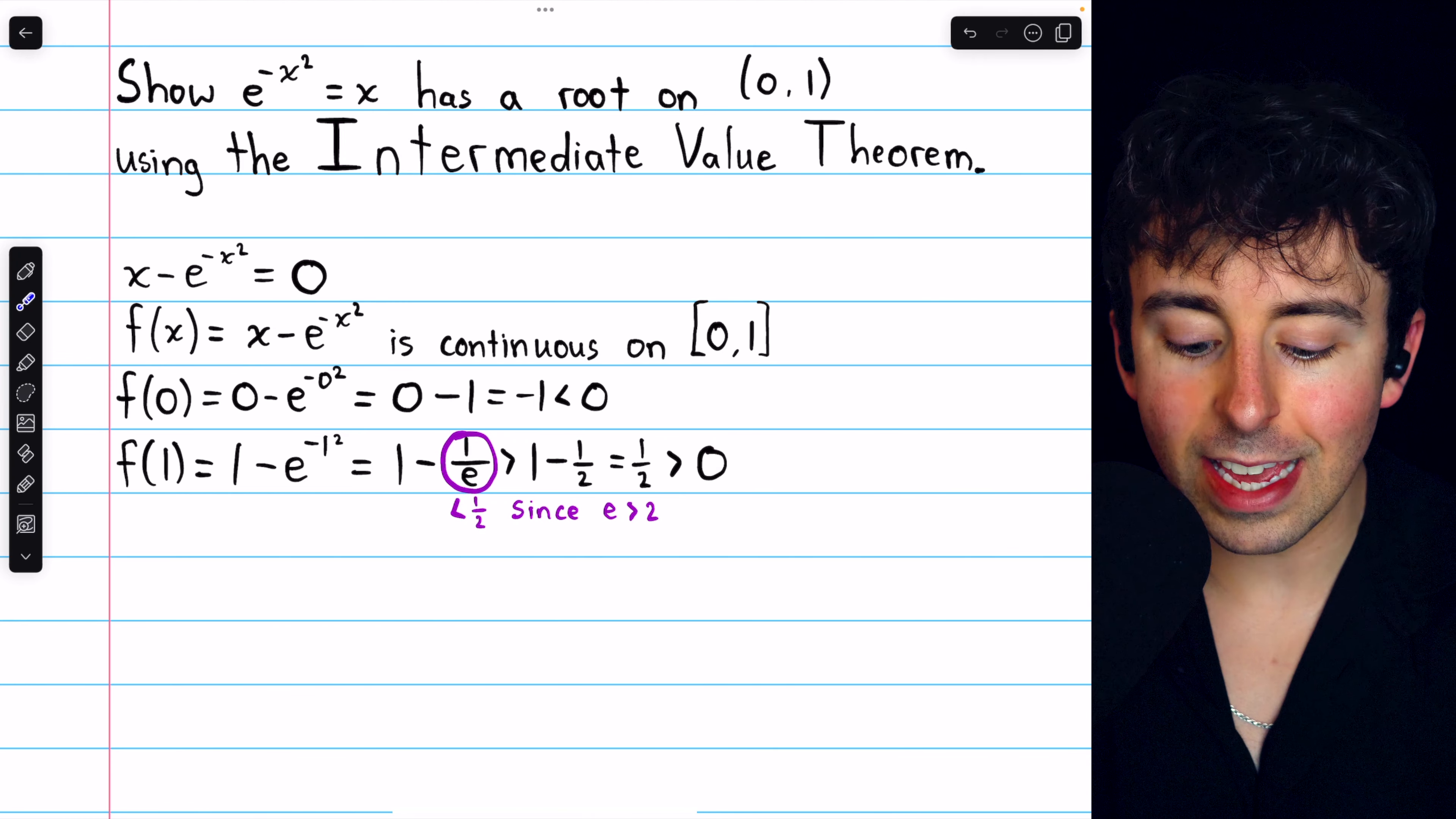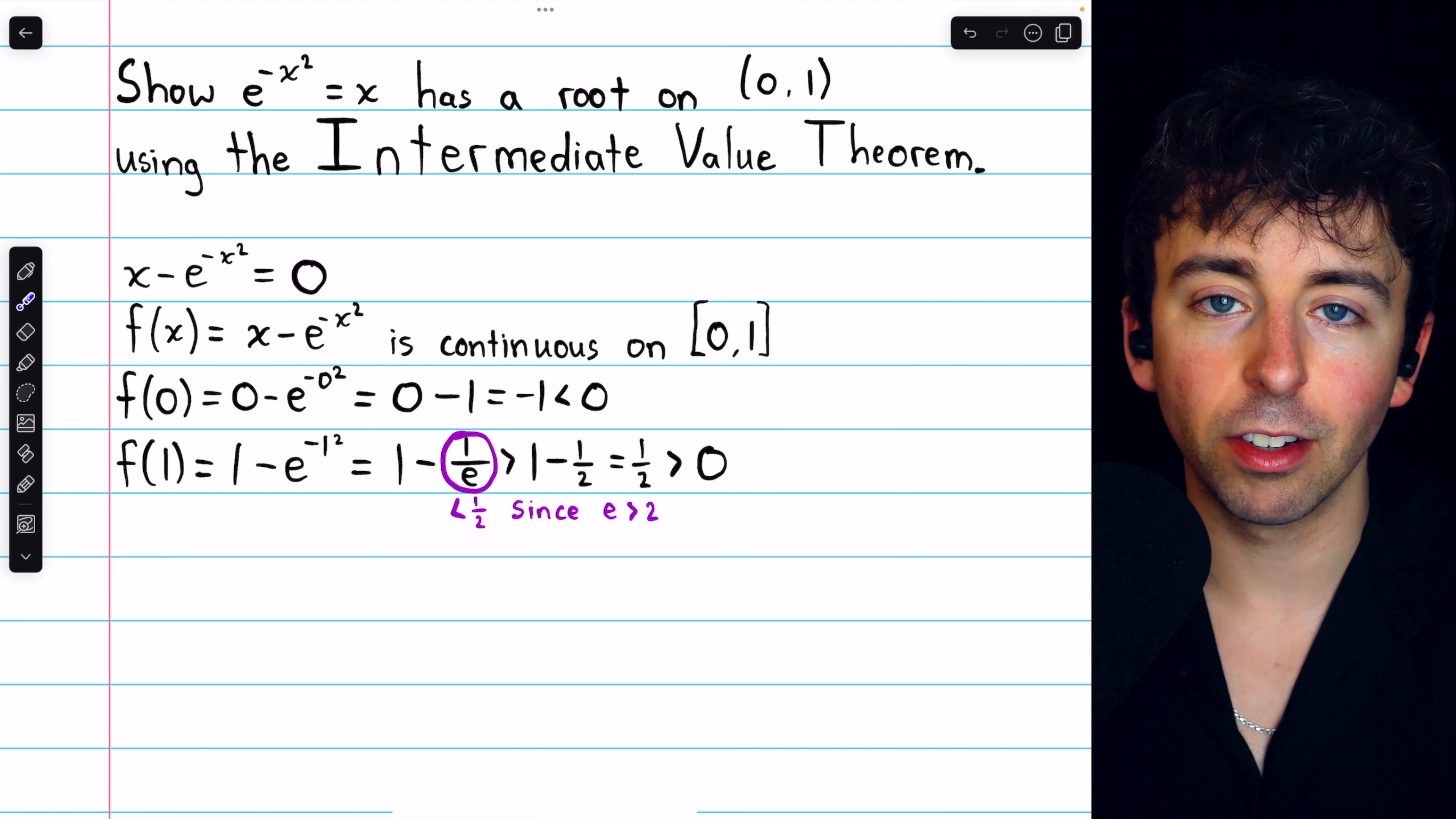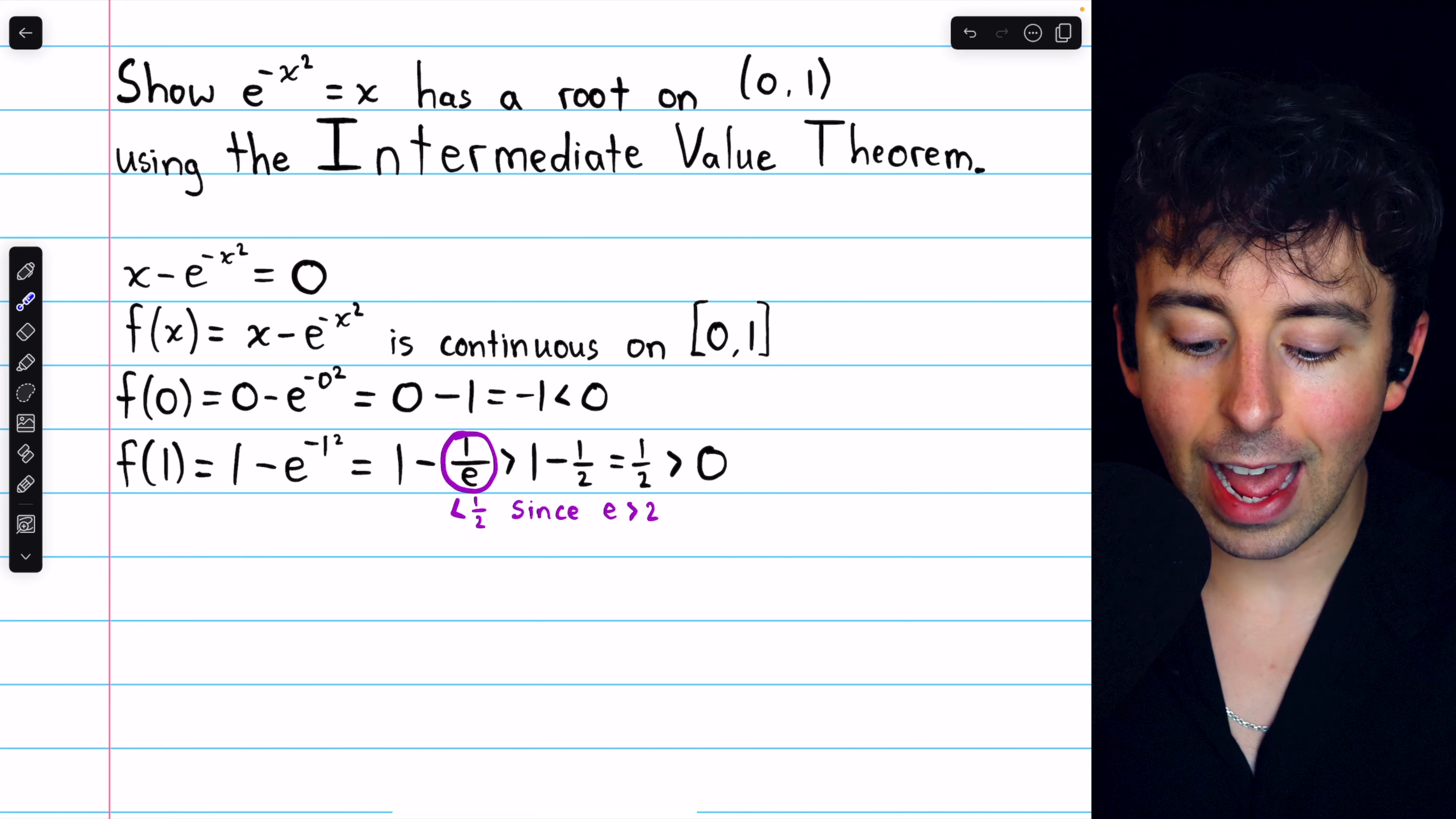Now, we know that 1 over e is less than a half, because e is bigger than 2, so 1 over e is less than 1 divided by 2. e, recall, is 2.718, etc. So since 1 over e is less than a half,